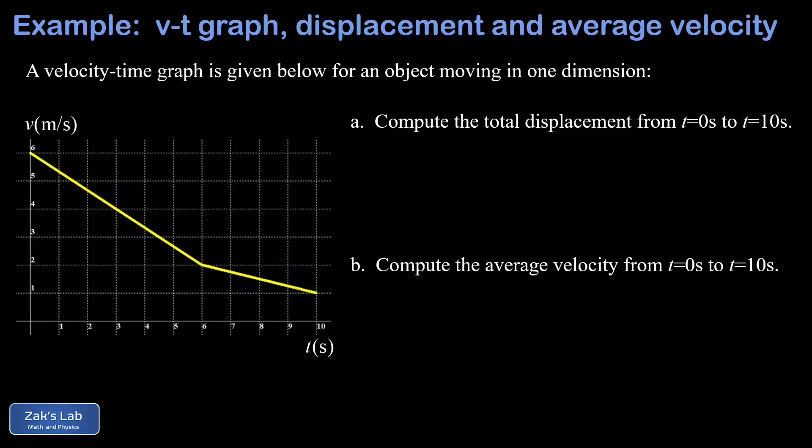In this problem we're given a velocity-time graph for an object moving in one dimension. In part A, we're asked for the displacement for this object on a given time interval from 0 to 10 seconds, and then in part B we're going to compute the average velocity for this object on the same time interval.